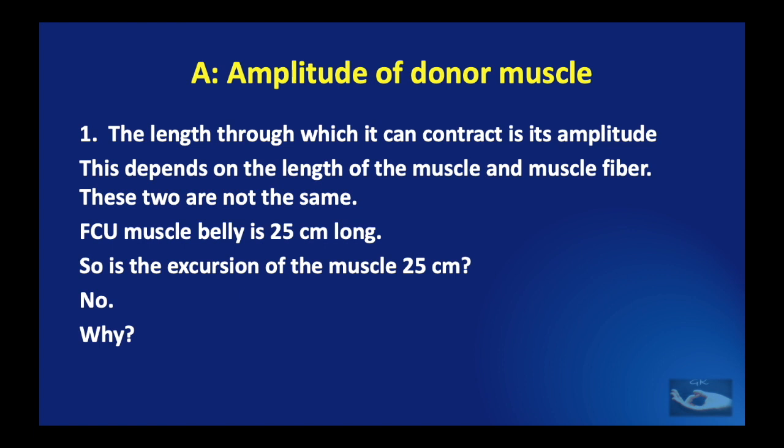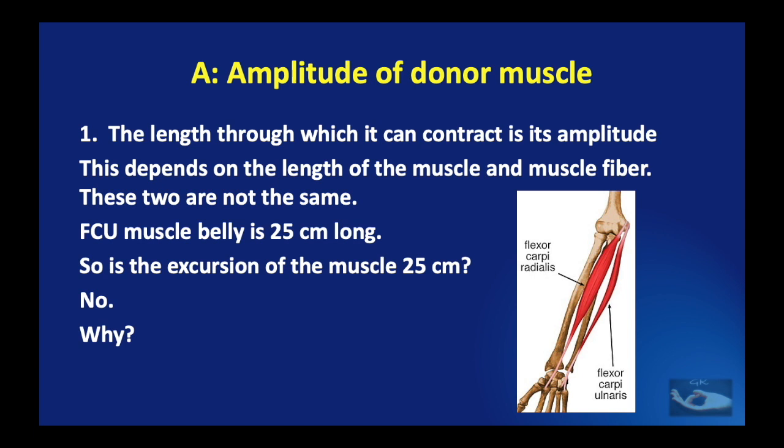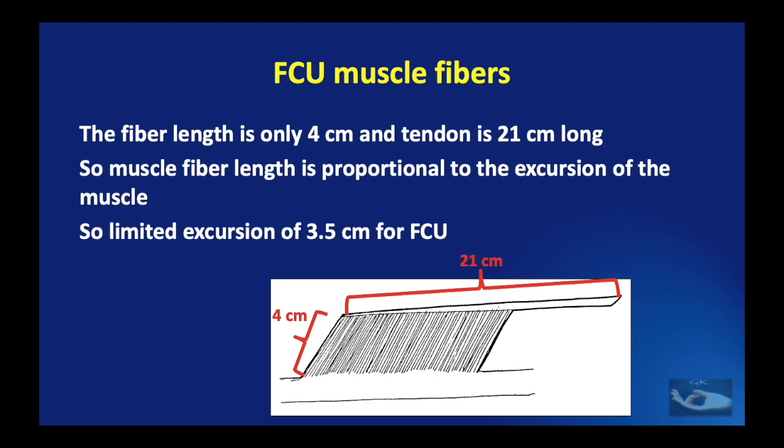The length through which a muscle can contract is its amplitude. This depends on the length of the muscle and the muscle fiber, but these two are not the same. The flexor carpi ulnaris muscle belly is 25 cm long, but if we dissect it we find that the fiber length is only 4 cm and the tendon is 21 cm long. The muscle fiber length is proportional to the excursion of the muscle, so the flexor carpi ulnaris has a limited excursion of only 3.5 cm. All muscles have their own amplitude.